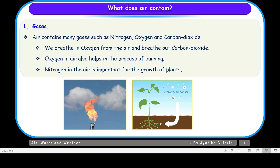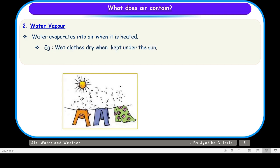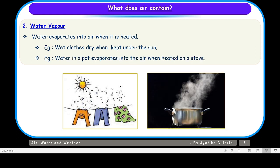Now let us take up another constituent of air, and that is water vapor. Water evaporates into air when it is heated. For example, wet clothes dry when kept under the sun. Water in a pot evaporates into the air when heated on a gas stove. When the water gets heated, it gives rise to steam or water vapor, and these water vapors escape into the air and become part of the air.